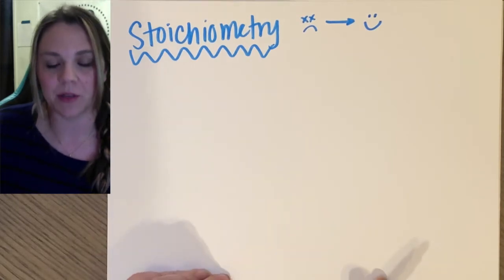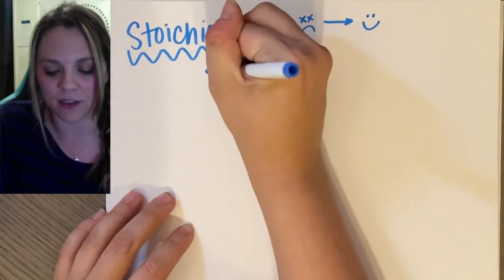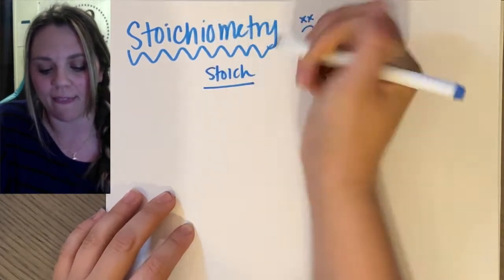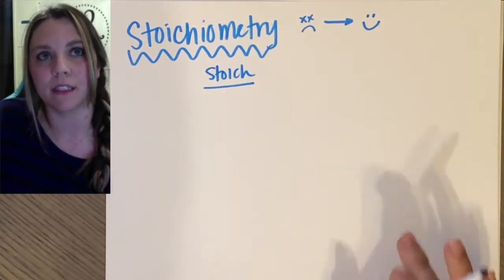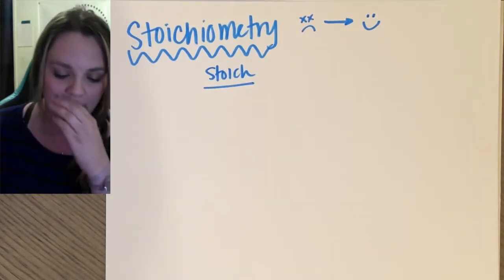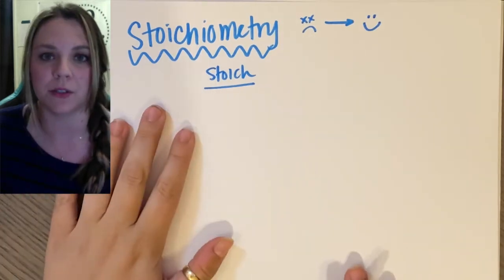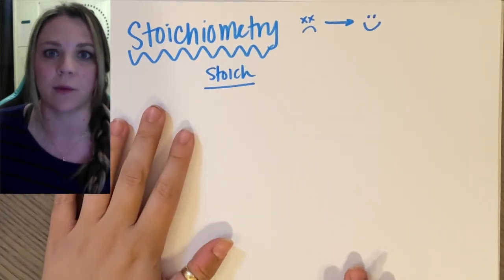Stoichiometry, we of course abbreviate it as stoic. Stoic is a lot of math, I won't lie to you, but it's not tricky math. Basically all stoichiometry is is just like a recipe.